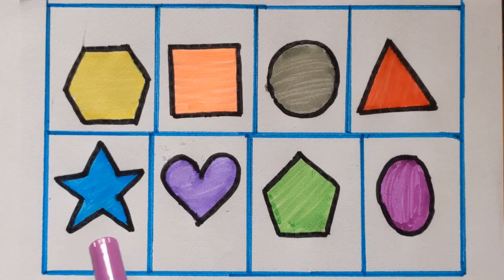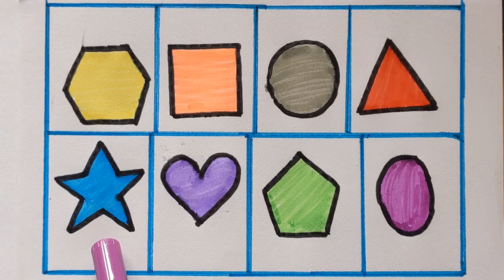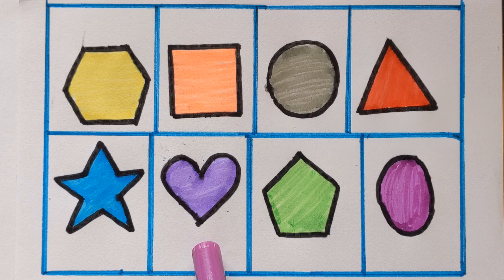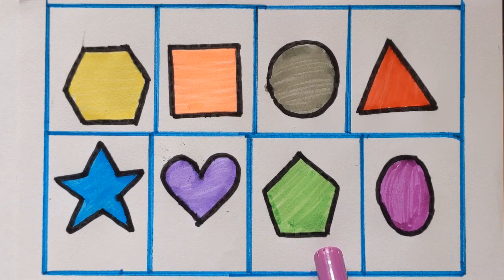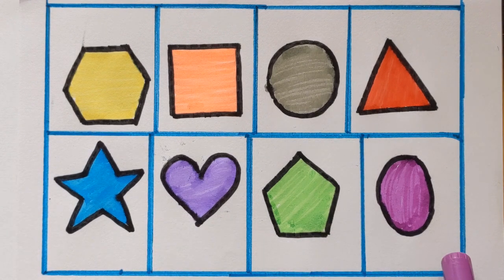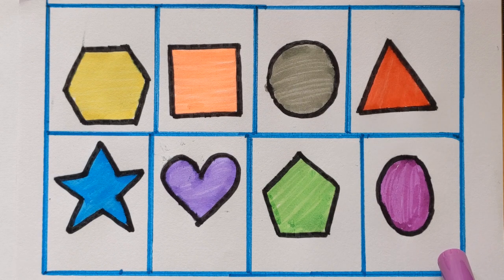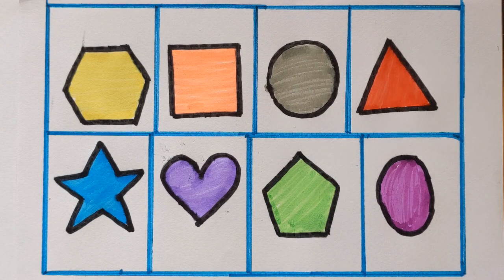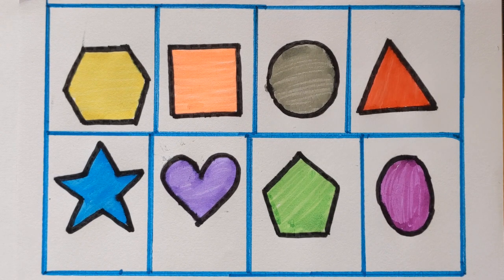Triangle, red color. Star, sky blue color. Heart, violet color. Pentagon, light green color. And oval, purple color. Hey guys, if you liked the video, don't forget to subscribe, like, and share. Thank you.